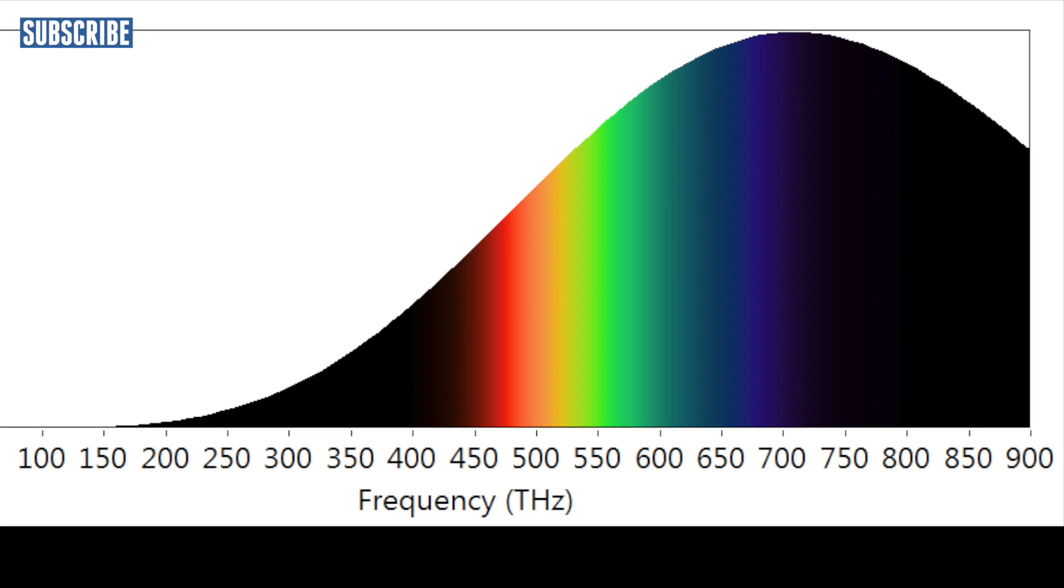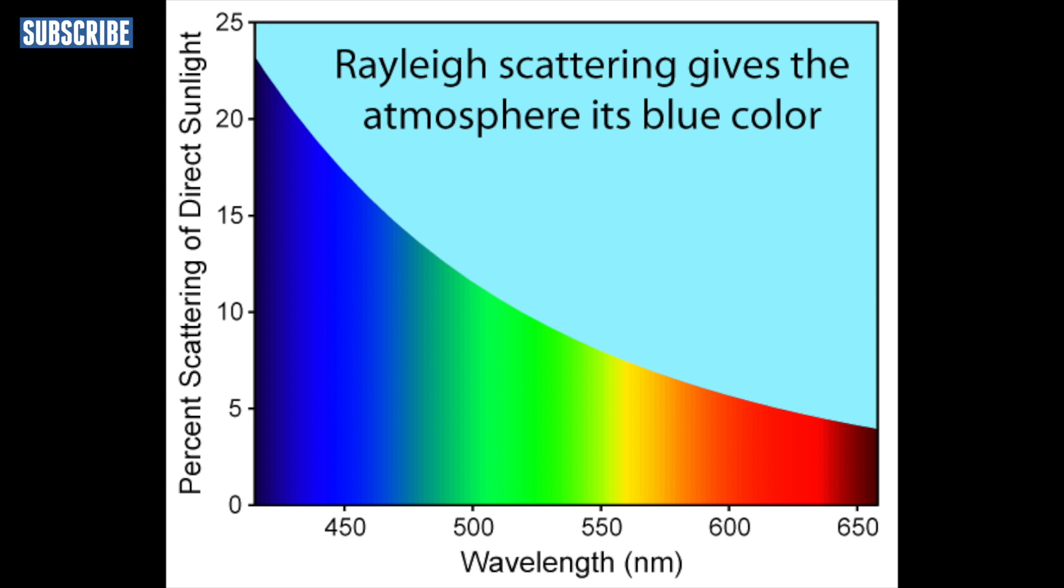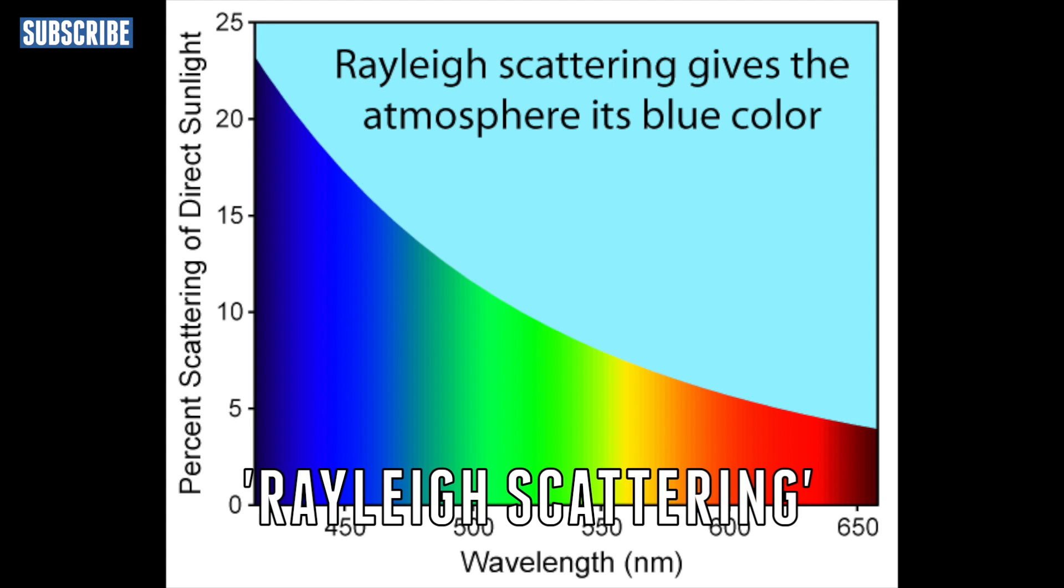The higher frequency colors, like blue, are absorbed much faster than the lower frequency colors, like red. This was a scientific process that was discovered and described in the 1870s by an English physicist called Lord John Rayleigh. Because he discovered it, he called it the Rayleigh scattering.